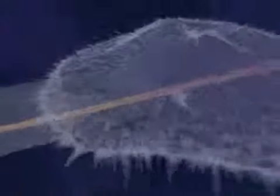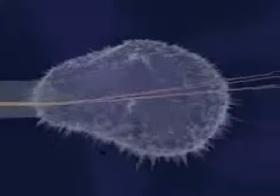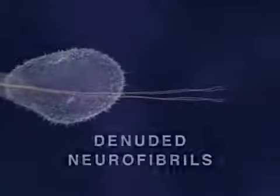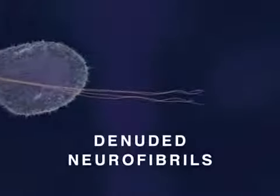Consequently, the neurite's microtubules begin to disassemble into free tubulin molecules, leaving the neurite stripped of its supporting structure. Ultimately, both the developing neurite and its growth cone collapse, and some denuded neurofibrils form aggregates, or tangles, as depicted here.